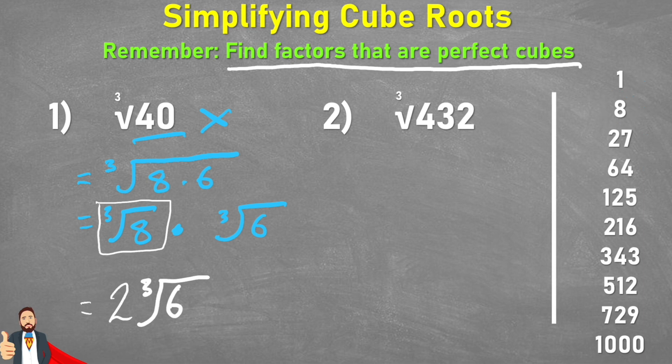Now let's look at number 2. We have the cube root of 432. Can we see any factors of 432 in our list down the right hand side? Yeah, I can see 216. Because 216 times 2 is 432. Therefore 216 is a factor of 432.